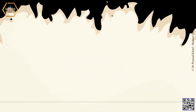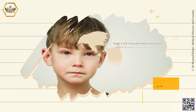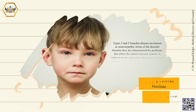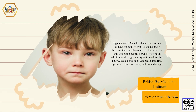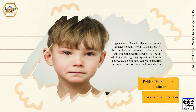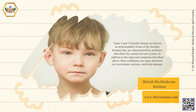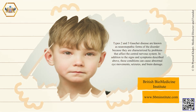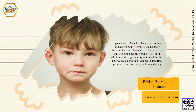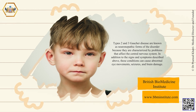Types 2 and 3 Gaucher disease are known as neuronopathic forms of the disorder because they are characterized by problems that affect the central nervous system. In addition to the signs and symptoms described above, these conditions can cause abnormal eye movements, seizures, and brain damage.